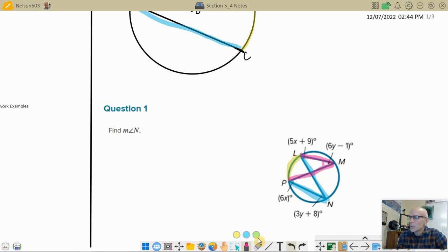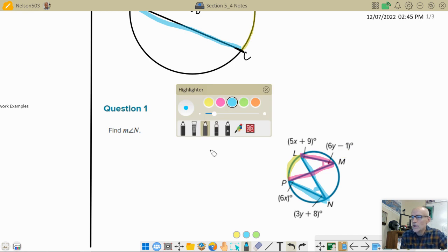Do you see that angle right there and then the blue angle down here? They've got to be equal to each other because they're intercepting that same LP arc. So what I'm going to do is I'm going to set 3y + 8 equal to 6y - 1, and then I'm going to try to solve that equation.